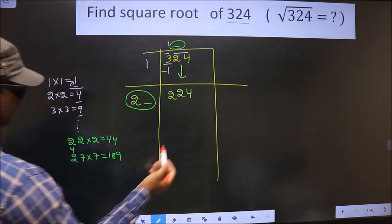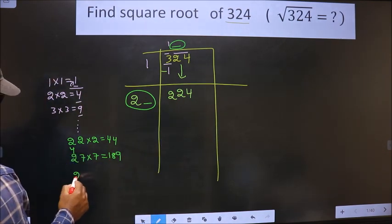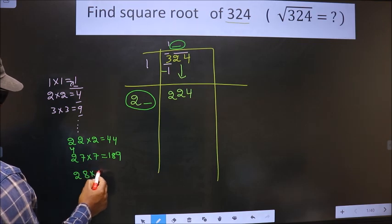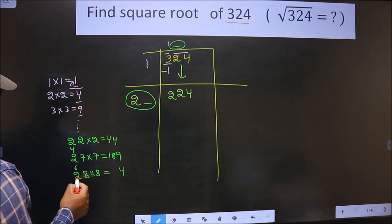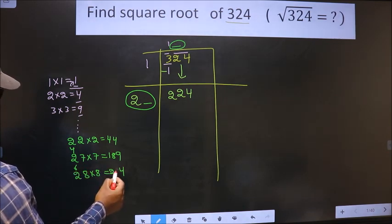This also far from 224. So if we take 28 into 8, 8, 8, 8, 64. 8 to 16, 16 plus 6 is 22.